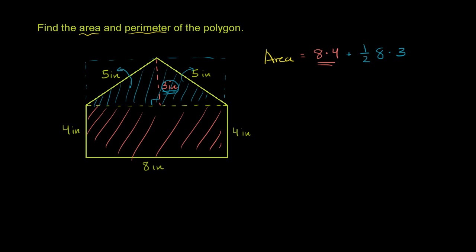So once again, let's go back and calculate it. So this is going to be 32 plus 1 half times 8 is 4. 4 times 3 is 12. And so our area for our shape is going to be 44.